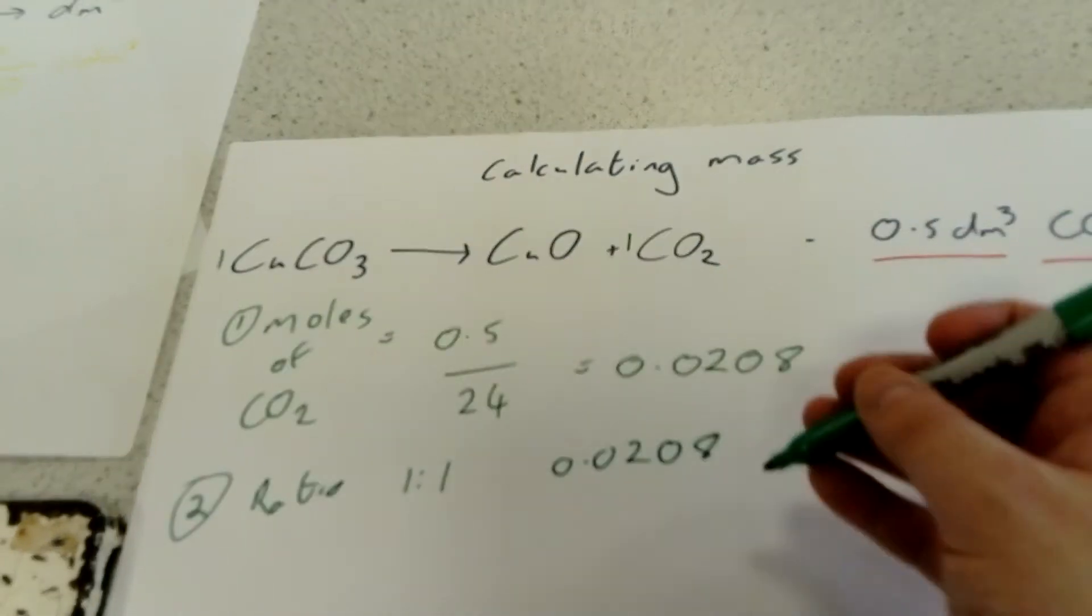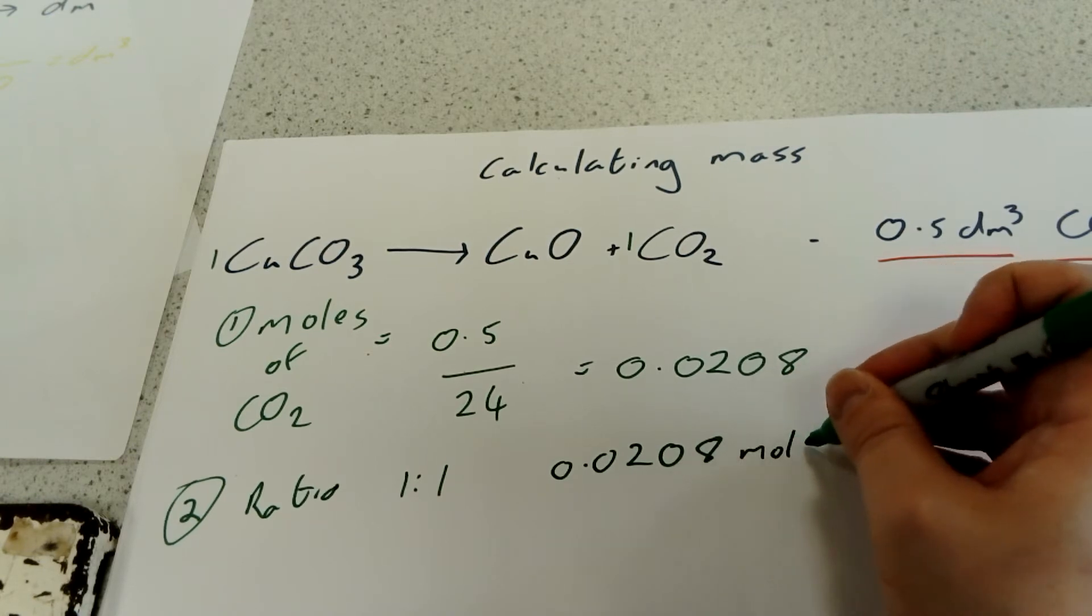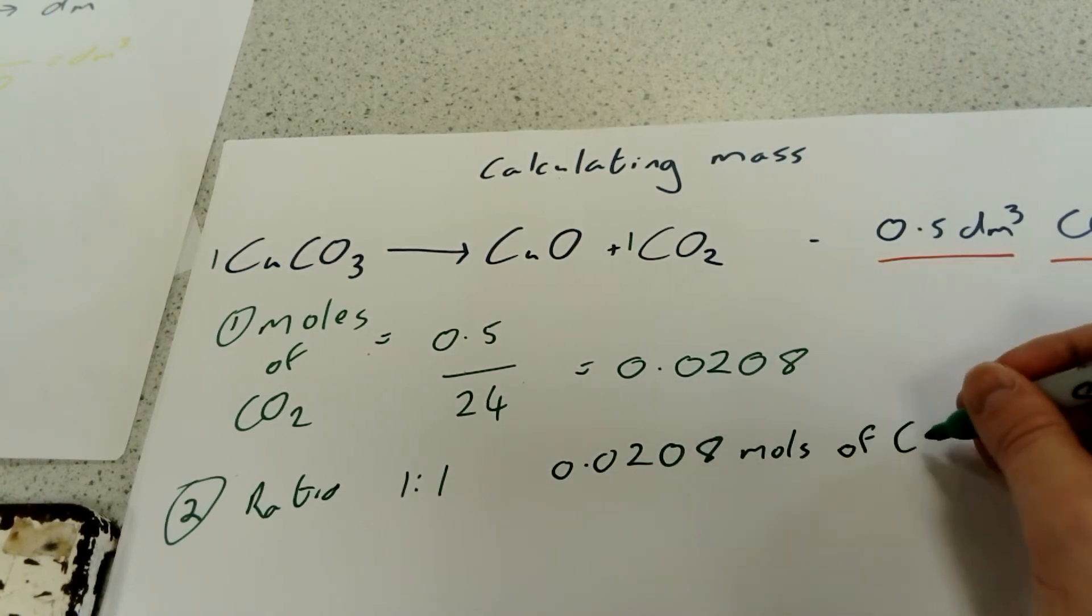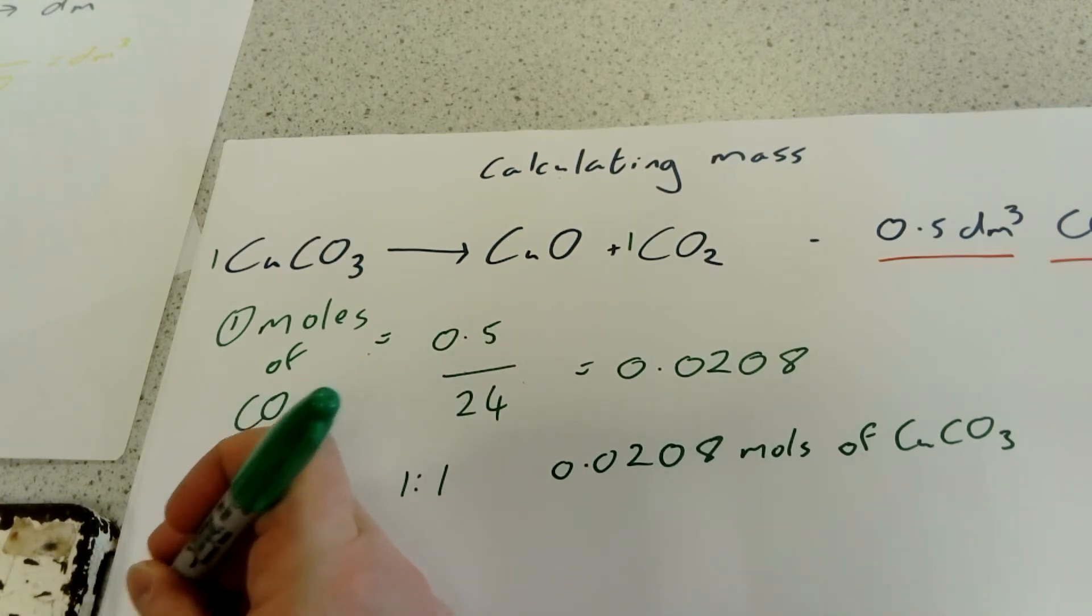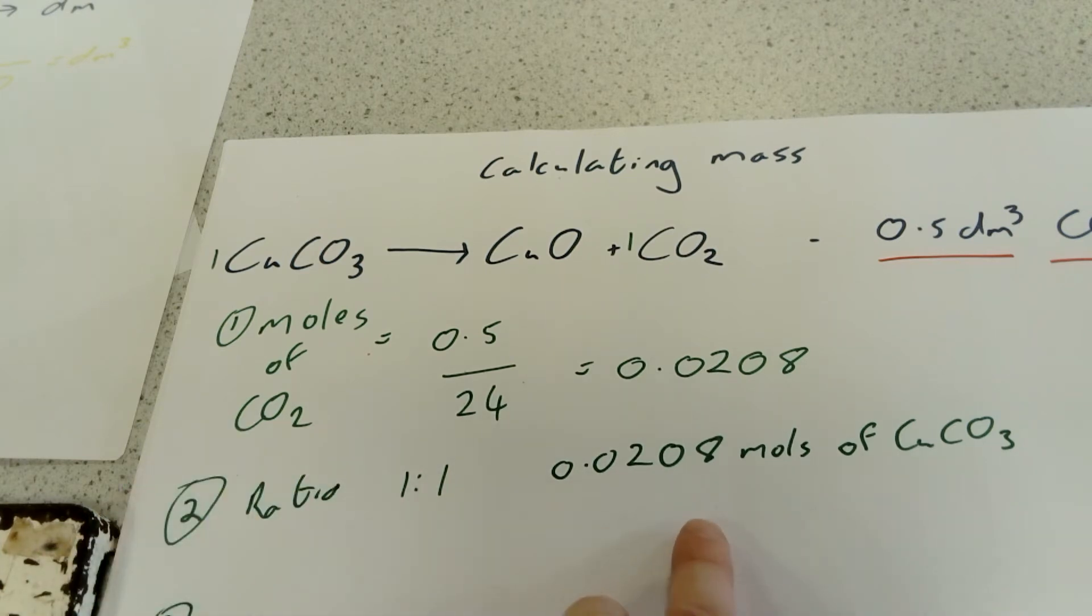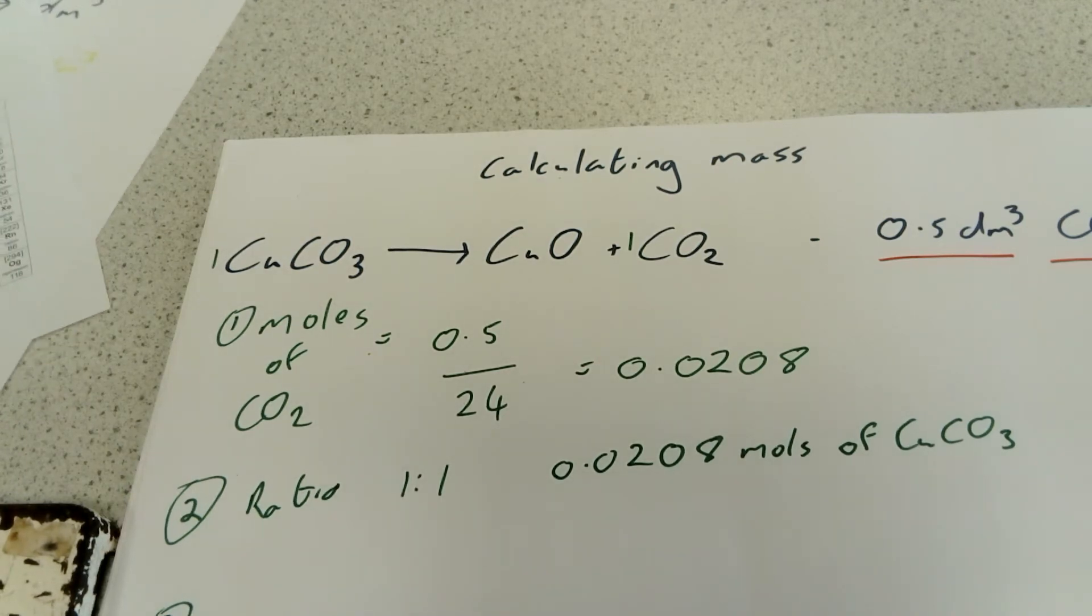So if we know that we've got 0.0208 moles of carbon dioxide, we must also need 0.0208 moles of copper carbonate. Lastly, we need to work out how much 0.0208 moles of copper carbonate weighs. We work that out by working out the relative atomic mass of copper carbonate to see how much one mole would weigh.